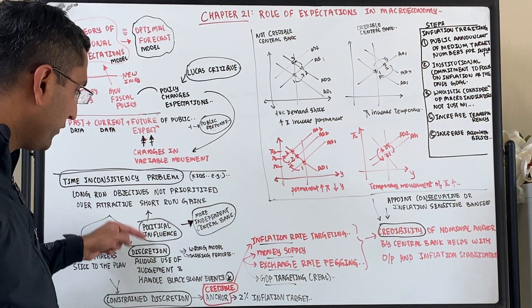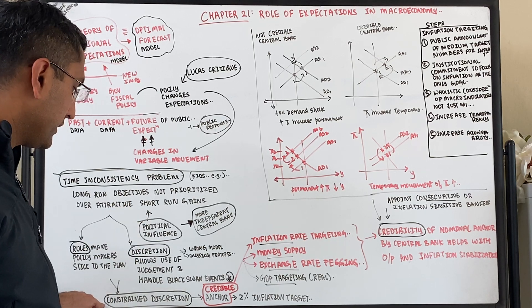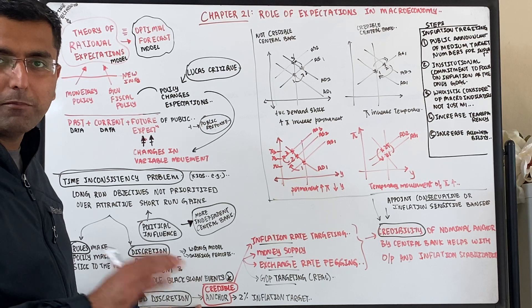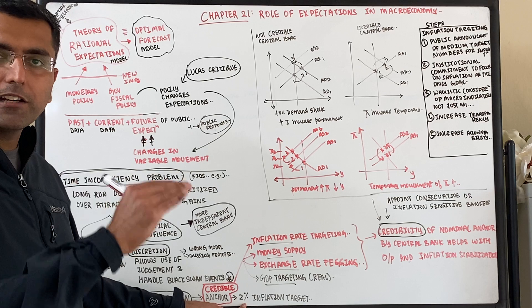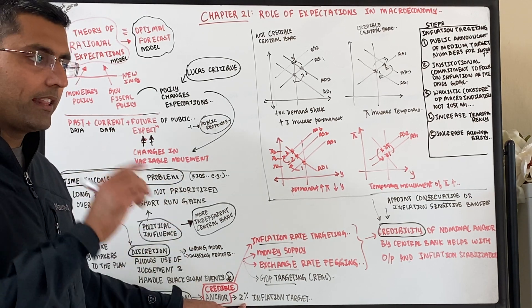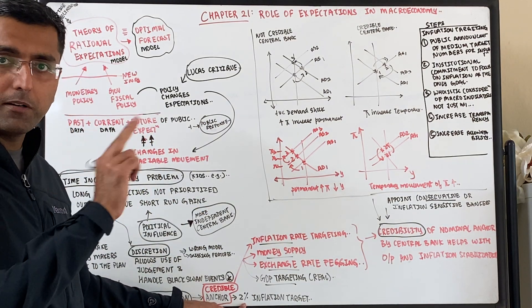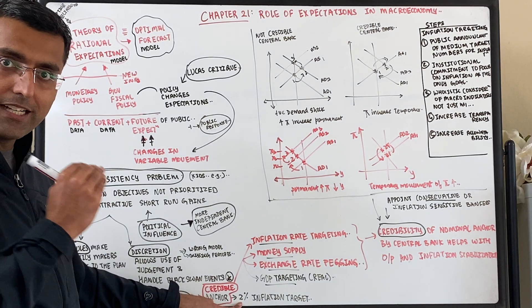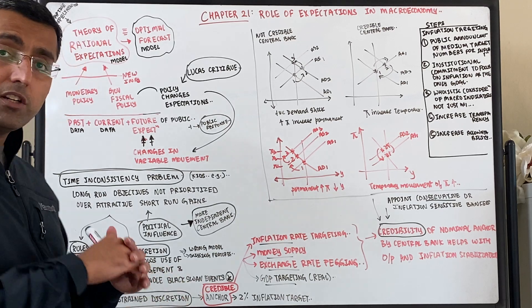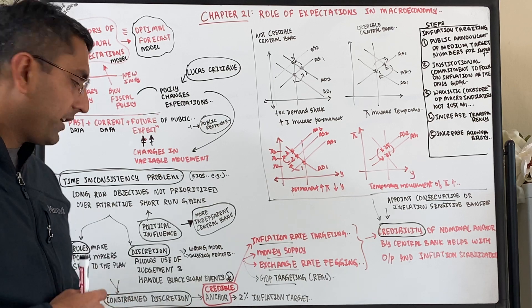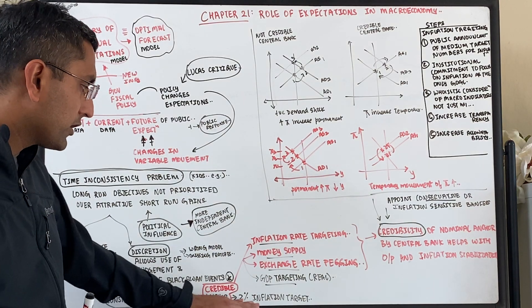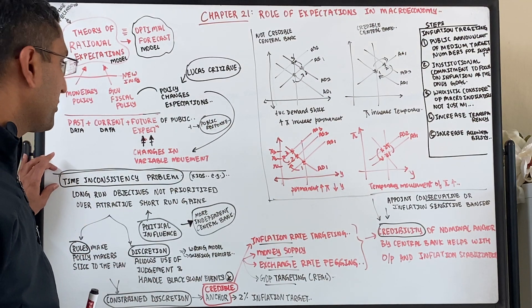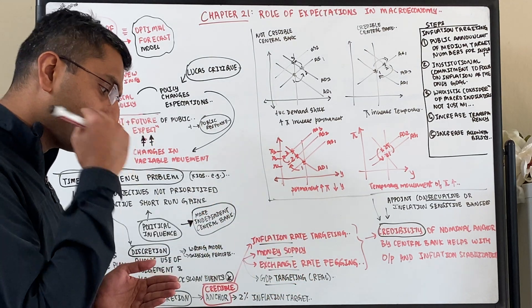Pure discretion can also be influenced by political parties, so the best alternative is a combination called constrained discretion. By constrained discretion, the Federal Reserve picks a credible anchor — for example, a 2% inflation target — as its stated dual mandate goal: number one is low inflation, and number two is maximum sustainable employment. The Federal Reserve constrains itself to focus on getting to 2% inflation, while keeping full flexibility in how and when it does it. Picking a credible anchor really helps solve the time inconsistency problem by focusing on the long term.